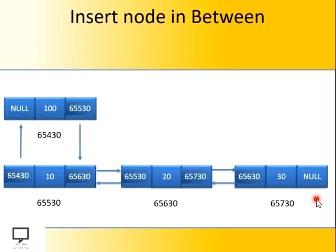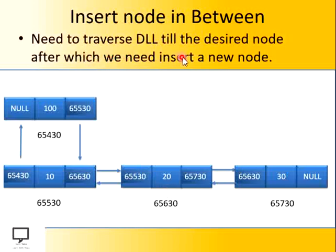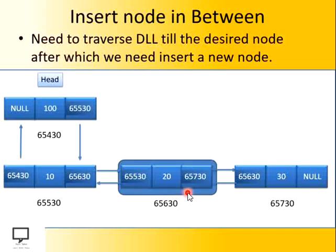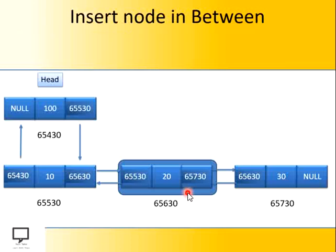Let's consider I want to insert a node after 20. What steps I supposed to follow? First of all, we supposed to traverse the doubly linked list till the desired node, that is node 20, because after 20 I have decided to insert a node. Let's start with the head node and traverse it to the node after which you want to insert a new node. I am going to stop at this position. After this, I have to create a new node.